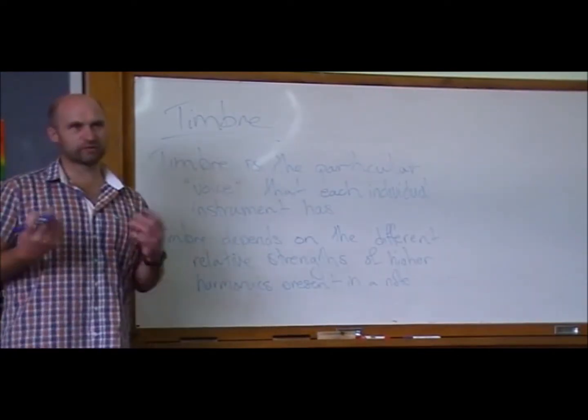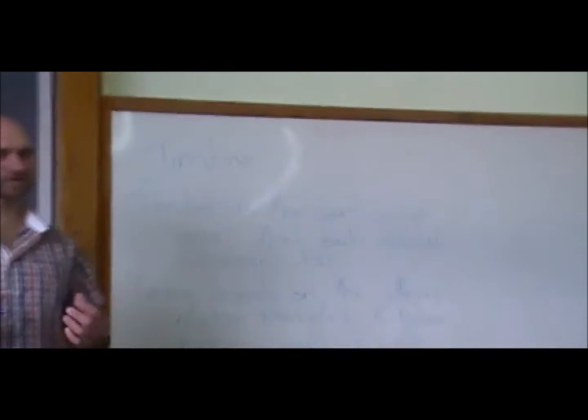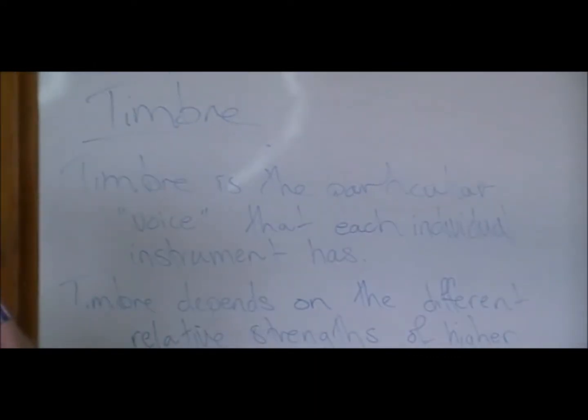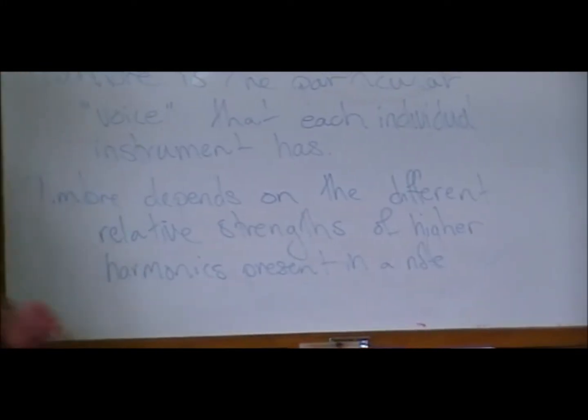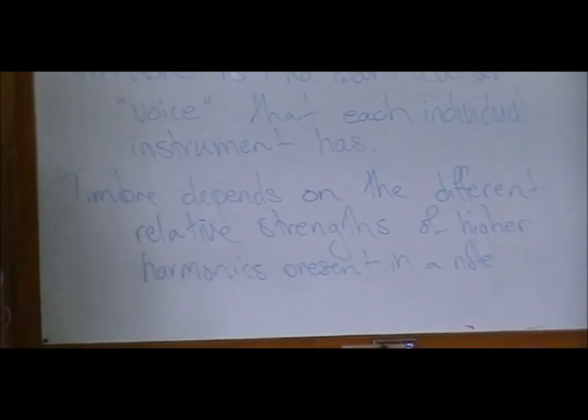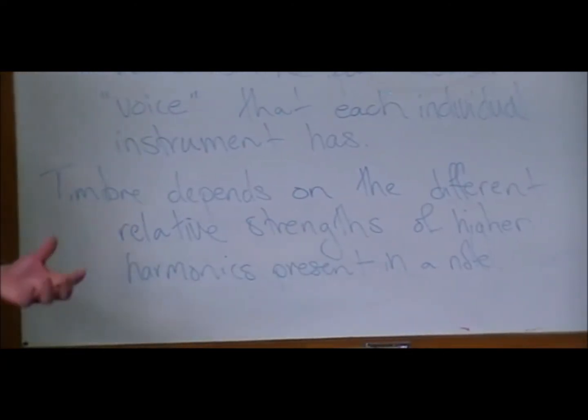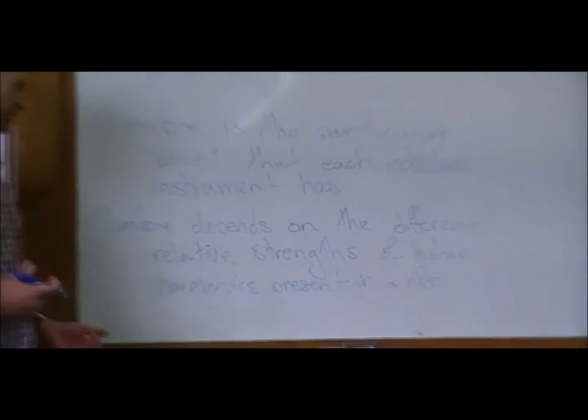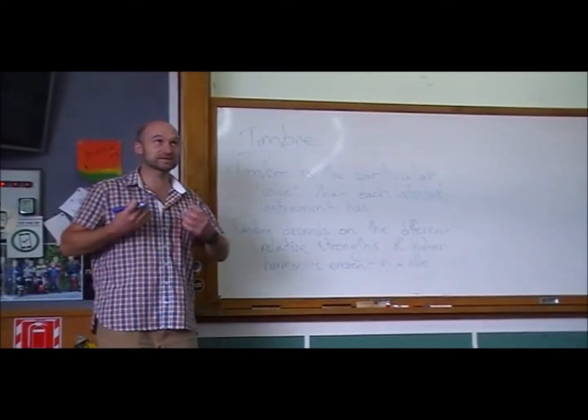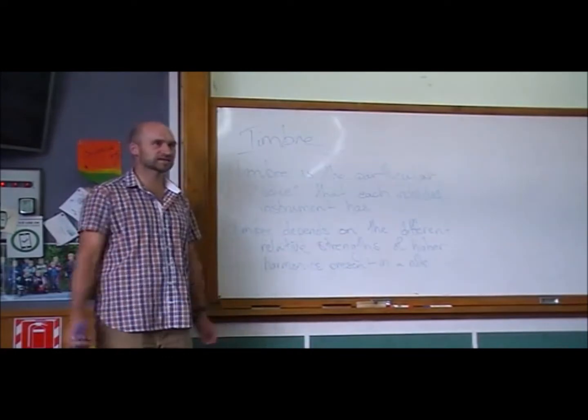So, timbre's like the voice of an instrument. Timbre is what makes a piano and a trumpet playing the same note sound different. Same note, but there's going to be different higher harmonics present in a piano than there is when you blow the same note on a trumpet. So it's what gives each instrument its unique sound.